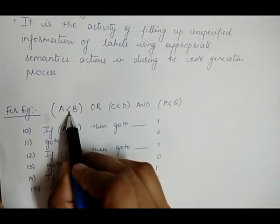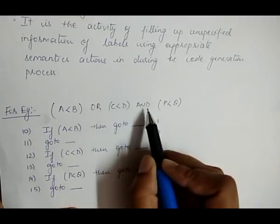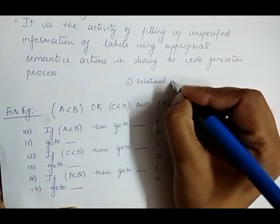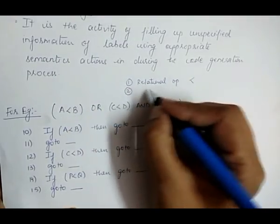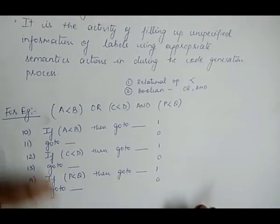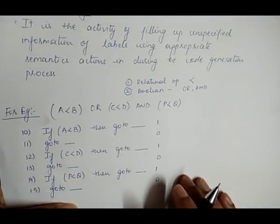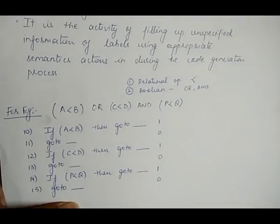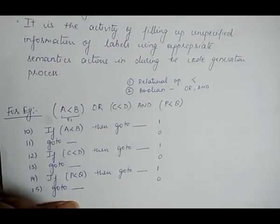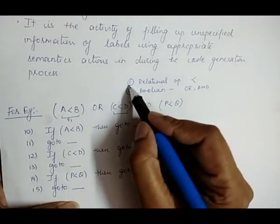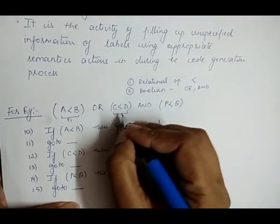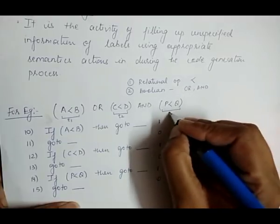In this whole expression there are two types of operators: one is a relational operator (less than) and another is boolean operators (OR and AND). To solve this expression we consider temporary variables — for example, we store 'a is less than b' in temporary variable t1.